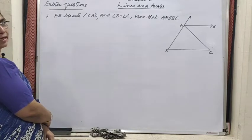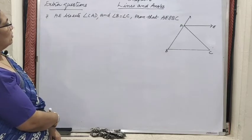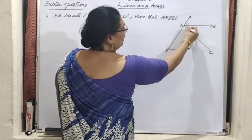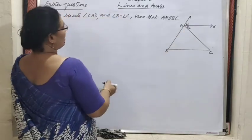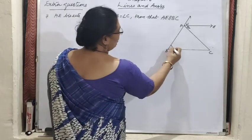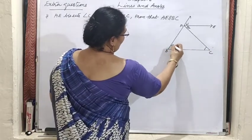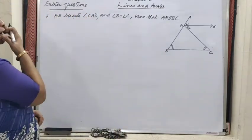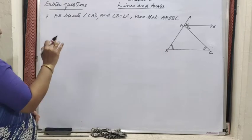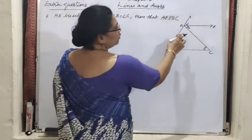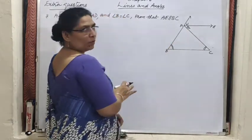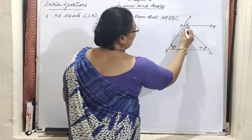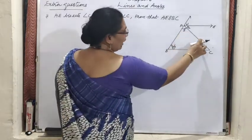Next question: AE bisects angle CAD and angle B equals angle C. AE bisects angle CAD means these two angles — marked as 1 and 2 — are both equal. Angle B equals angle C is also given. We have to prove that AE is parallel to BC. For that, we need to show that angle 2 and angle 3 are equal as alternate interior angles.